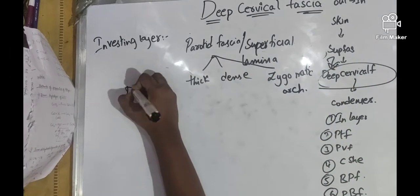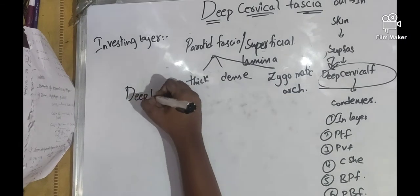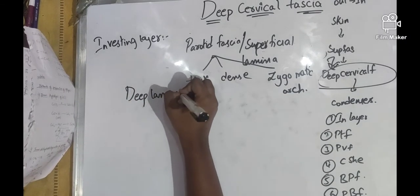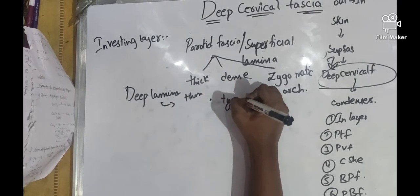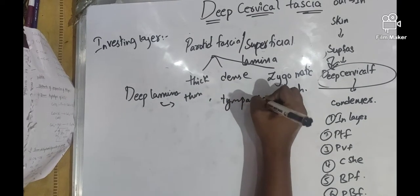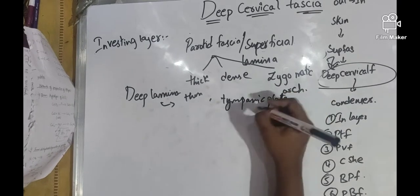It also consists of deep lamina which is thin and is attached to the tympanic plate and the mandible. Here we have an important point.